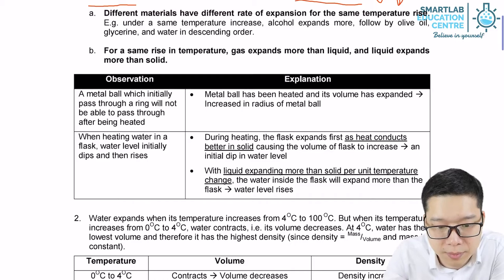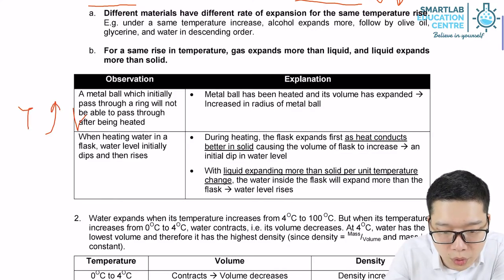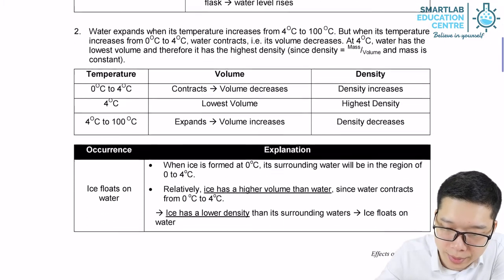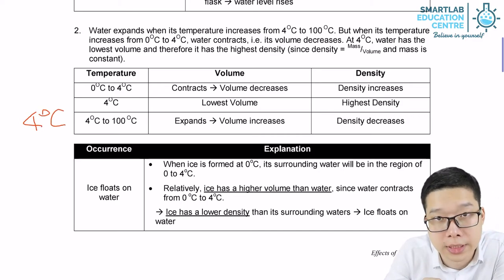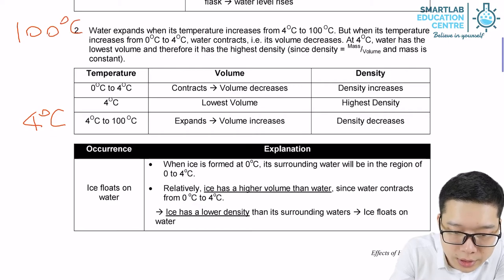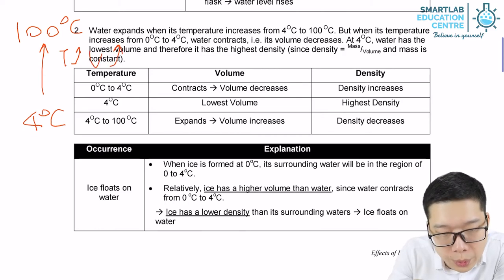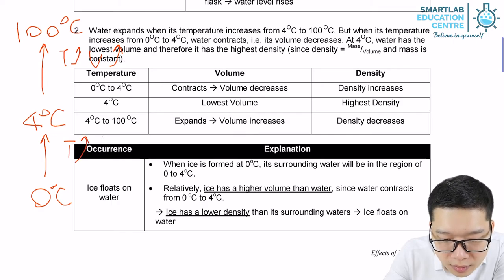So for most metals and common substances, when temperature increases or heat is absorbed, volume will increase; when temperature decreases or heat is lost, volume will decrease. However, there is a special case — pure water. Pure water has a special property at 4 degrees Celsius. From 4 to 100 degrees Celsius, when temperature goes up or heat is absorbed, volume goes up. But from 0 to 4 degrees Celsius, when temperature goes up, volume actually decreases instead.